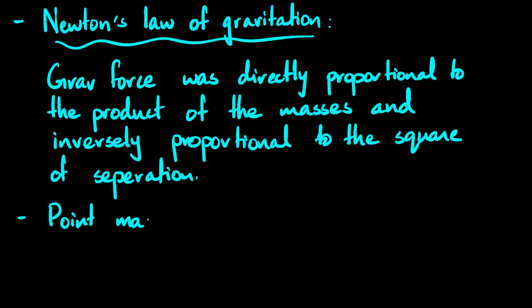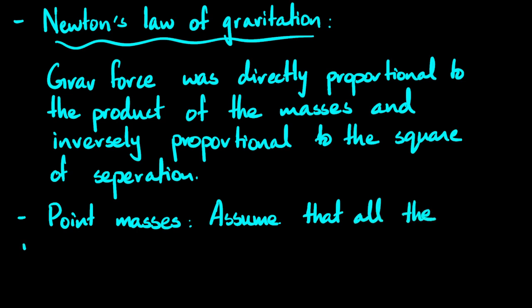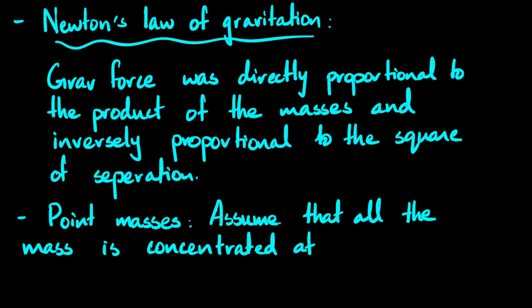What does point mass mean? The idea of point masses is simply that you can assume all the mass is concentrated at one point. For example, if you're talking about a sphere, to apply Newton's law of gravitation you can say all the mass is concentrated at one point, and for uniform objects that point is taken to be the center.